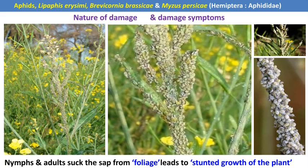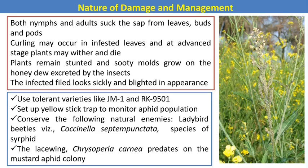The next pest is aphids — a major sucking pest of mustard. There are three species: Lipaphis erysimi, Brevicoryne brassicae, and Myzus persicae. In this picture, we can see that aphids congregate on different tender plant parts of mustard and start feeding. Both nymphs and adults are the damaging stages, sucking cell sap from tender plant parts. In severe infestation, plants become stunted, leaves become yellowish and drop down. Besides feeding, these pests excrete a honeydew-like sugary substance responsible for the development of black sooty mold fungus on plant parts, reducing photosynthesis and indirectly reducing yield.